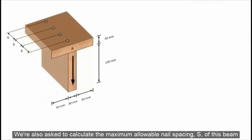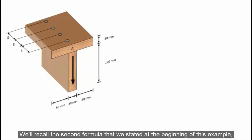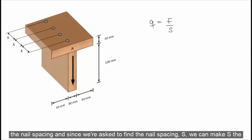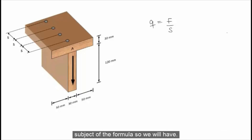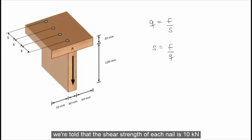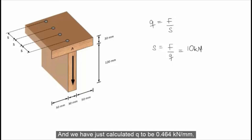We are also asked to calculate the maximum allowable nail spacing S if each nail has a shear strength of 10 kilonewtons. We will recall the second formula: q is equal to the shear strength of the nail divided by the nail spacing. Since we are asked to find the nail spacing S, we can make S the subject of the formula. From the question, the shear strength of each nail is 10 kilonewtons, therefore F is 10 kilonewtons, and we have just calculated q to be 0.464 kilonewtons per millimeter.